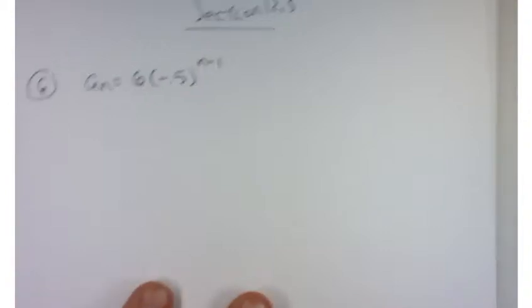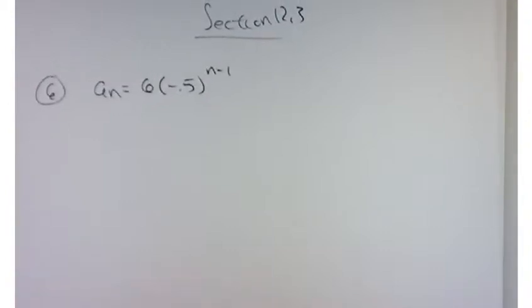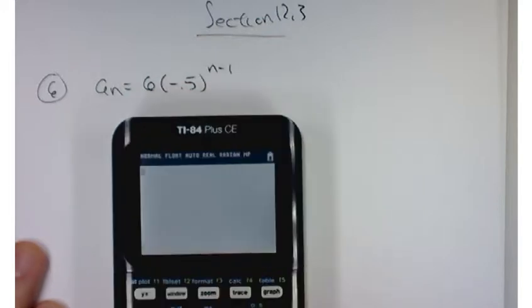So with section 12.3, problem number six, we're going to demonstrate how to do a sequence on your calculator. The problem asks you to list out the first five terms of that sequence and then graph it. Let's work on the first part, which is listing out the first five terms of that sequence.